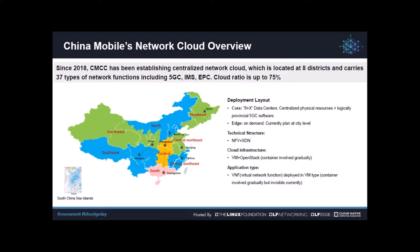Let's have an overview of CMCC's network cloud. Since 2018, CMCC has been establishing a centralized network cloud in eight districts in China. Our 5G core, IMS, and EPC are running on this cloud. The cloud ratio of CMCC's network is up to 75%, and currently we are planning to build edge cloud in each of our 31 provinces. Our network cloud uses NFV plus SDN as our technical structure. The infrastructure is virtual machines, and OpenStack is used for infrastructure management. Network functions are all VNFs in virtual machines. Containers are involved but are wrapped within virtual machines and not visible or manageable. We'll gradually introduce manageable containers and CNFs into our network cloud.